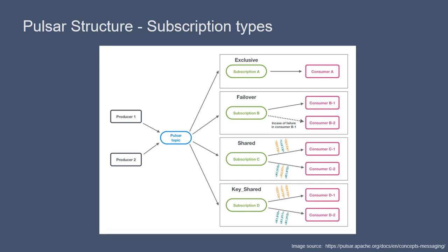In the shared subscription, multiple consumers can read from the same topic at the same time, which lends itself to scalability, but ordering is not preserved. KeyShared offers the best of both worlds: ordering is preserved and it's scalable. With KeyShared, multiple consumers can attach to the same subscription. Messages need to specify the ordering key, and the same ordering key is delivered to only one consumer.